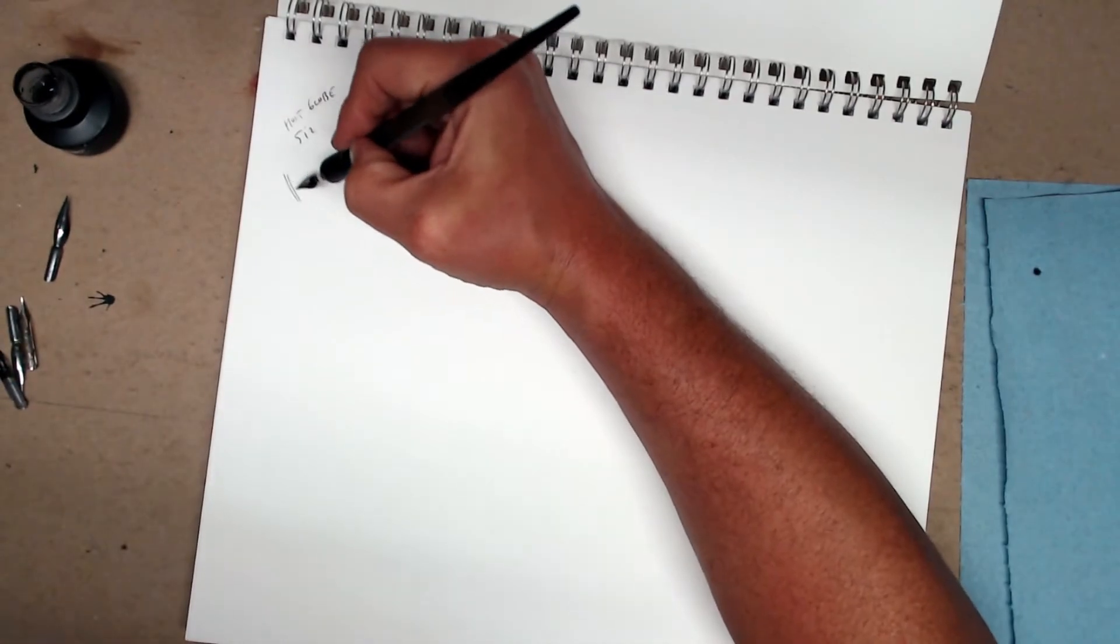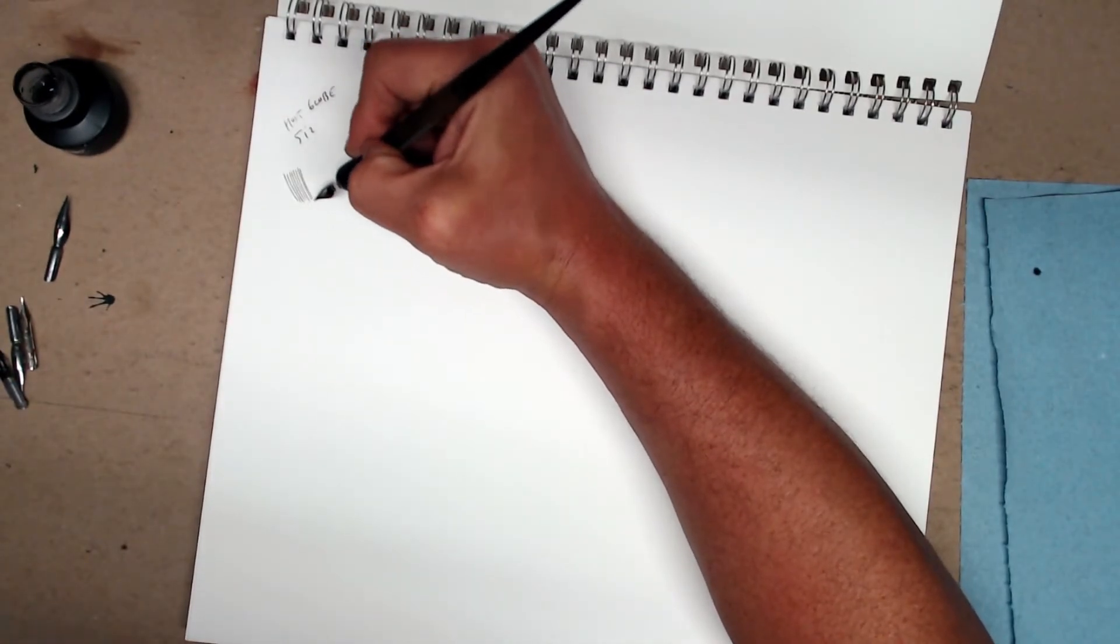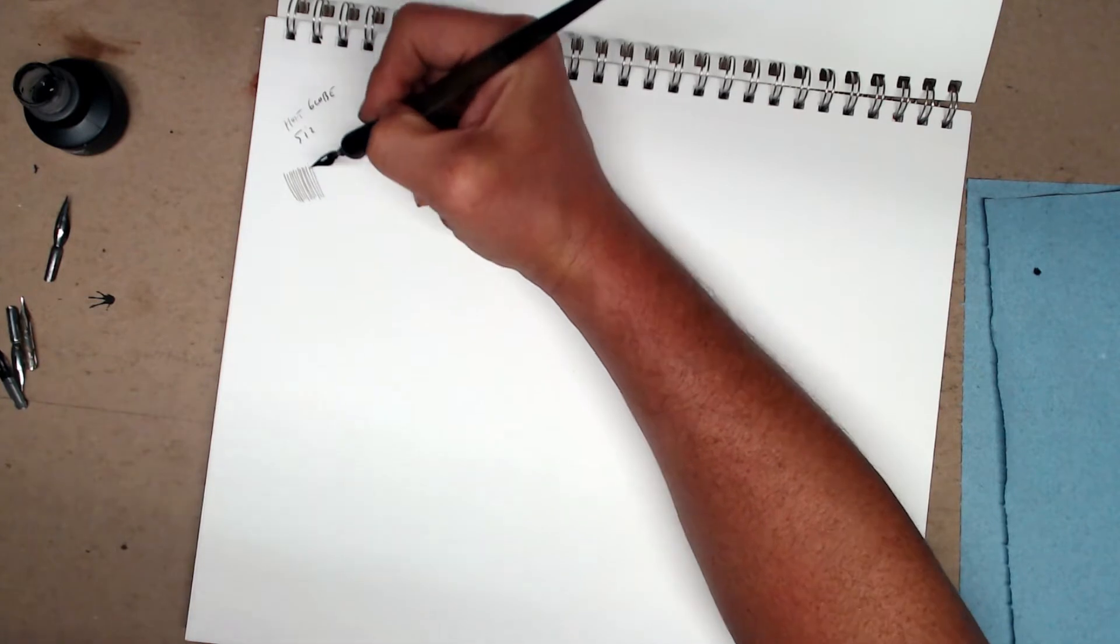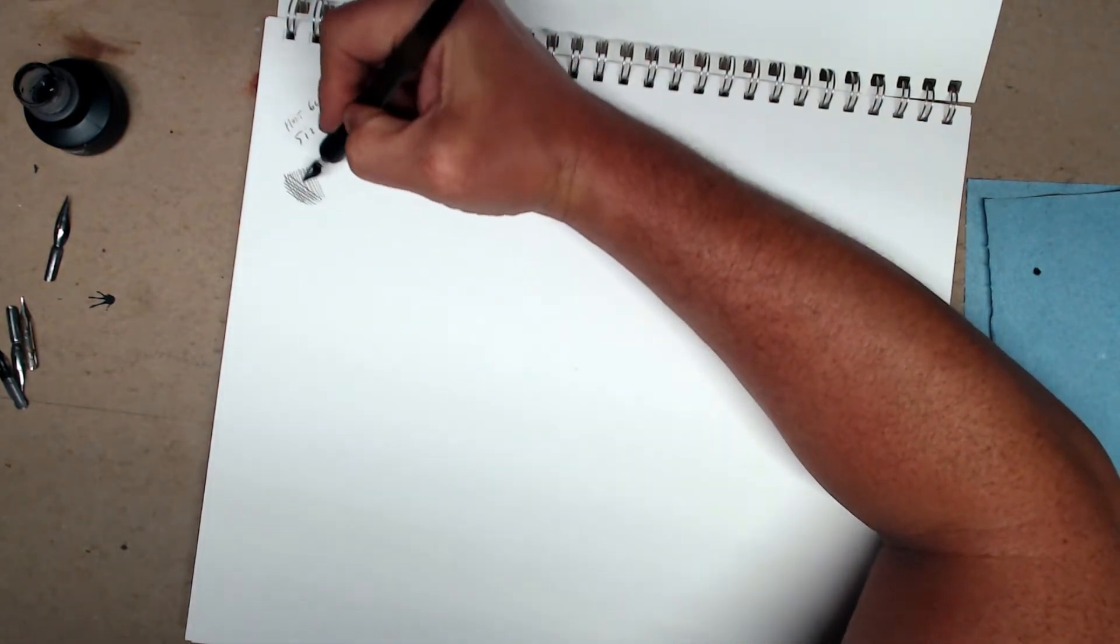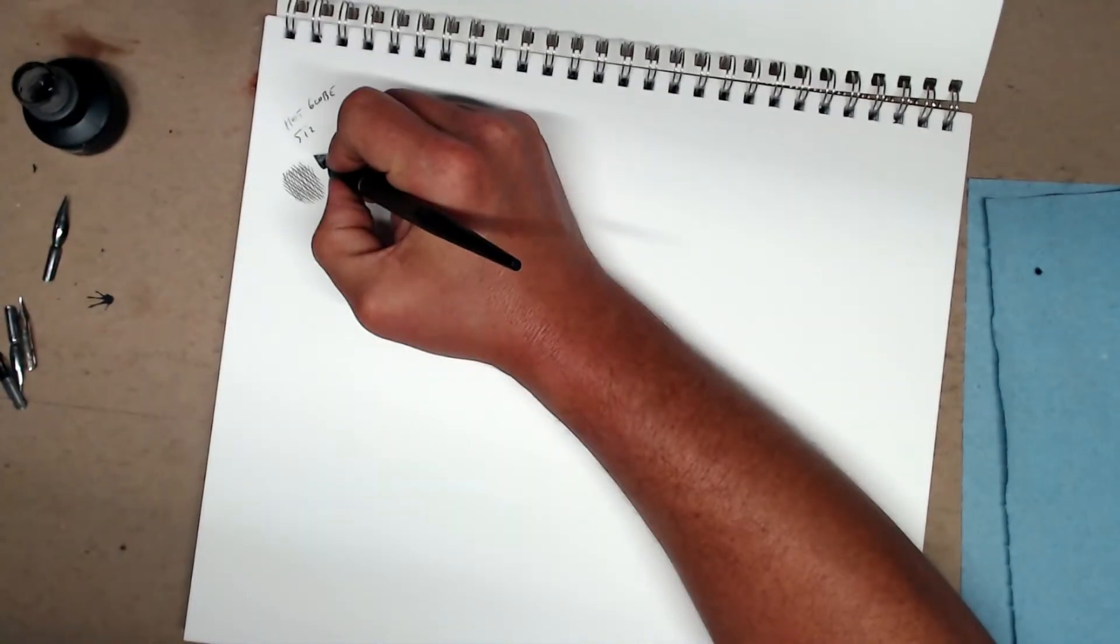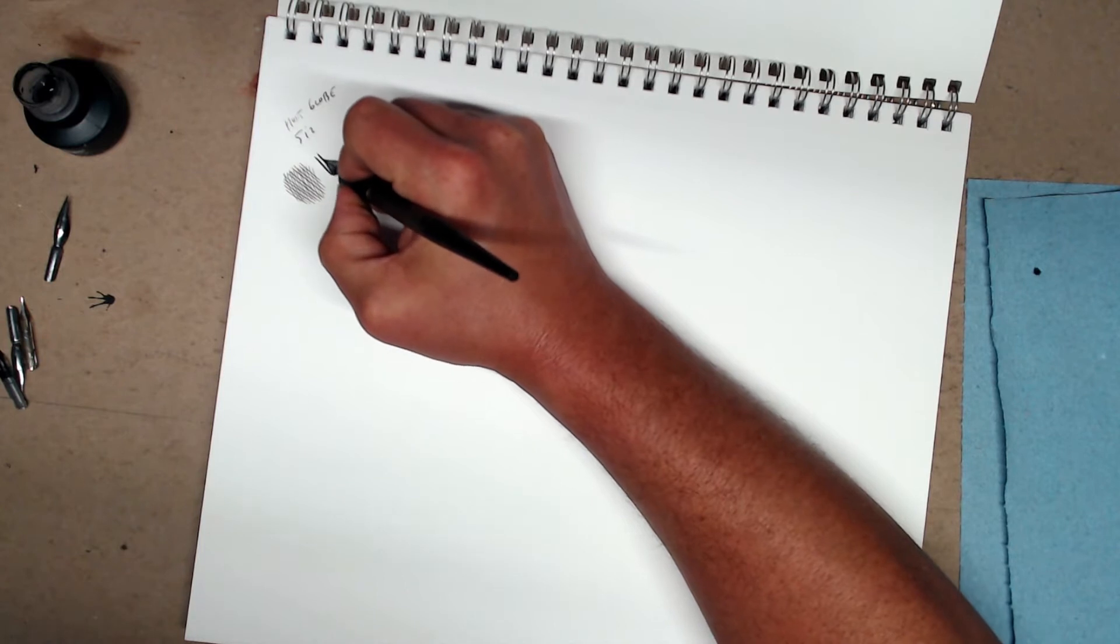I'll show you a number of different ways to make corrections, so it's not really as big a deal as you think. Okay, so this is our Hunt Globe 512. So this is considered an extra fine nib. It puts down a really nice line. This nib is sort of semi-flexible, meaning that in order to create a thicker line, I really have to put some pressure down on it.